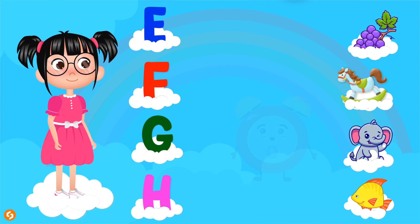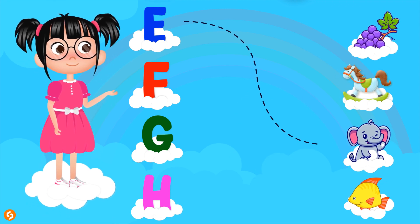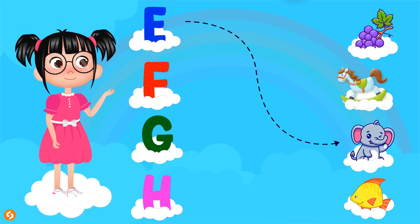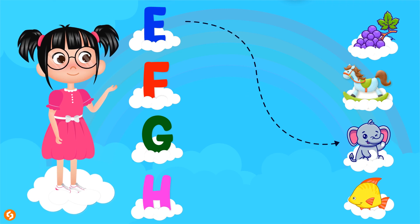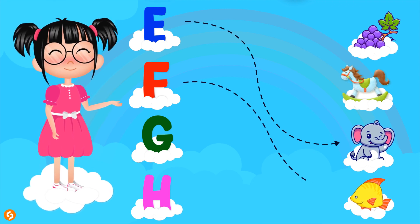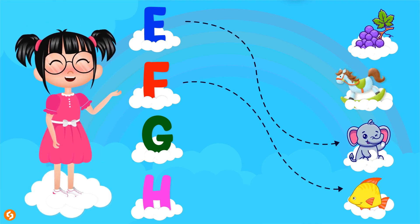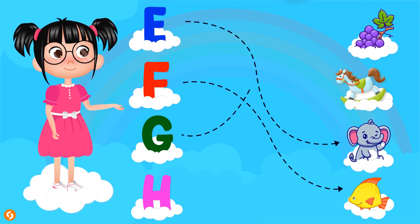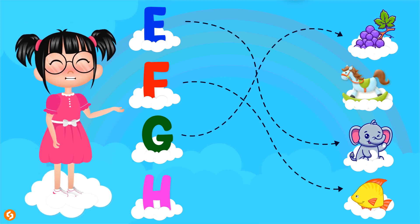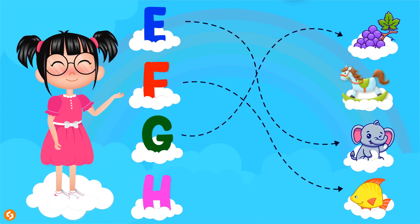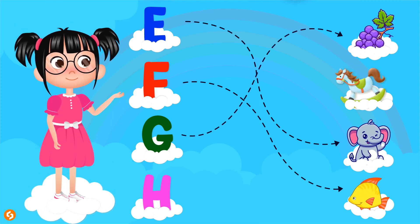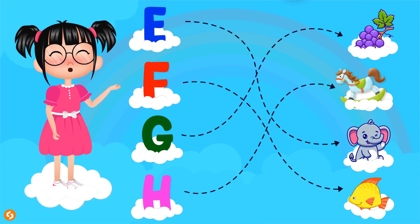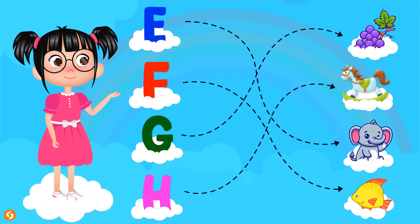E for Elephant. F for Fish. G for Grapes. H for Horse.